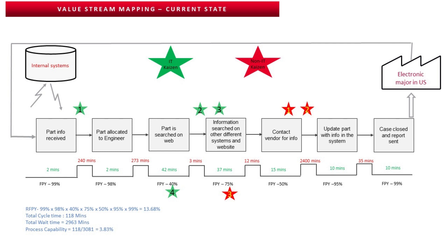The green times represent cycle time per process step and red represents wait time between steps. Step one takes 2 minutes, step two takes 2 minutes, part searching on the web takes 42 minutes, the next step takes 37 minutes, contacting the vendor takes 15 minutes, updating the information takes 10 minutes, and case reporting and closing takes 10 minutes. The major problem was the wait time: after part info received and allocation, there was a wait time of 240 minutes — parts were not automatically allocated to engineers, it was done manually.